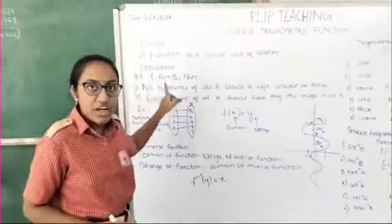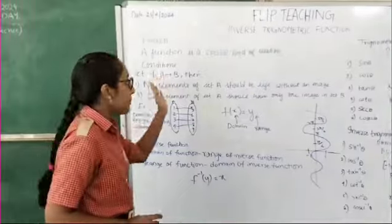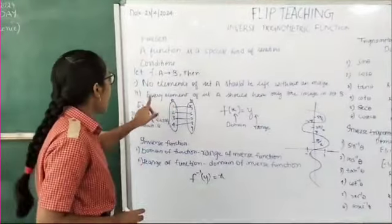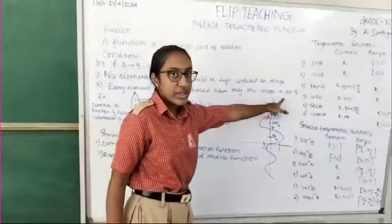If we define the function from set A to set B, then every element of set A should be mapped—no element should be left unmapped—and also every element of set A should have one and only one image in set B.